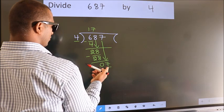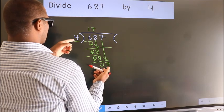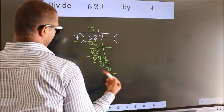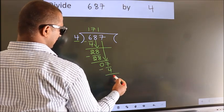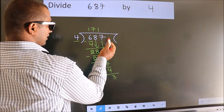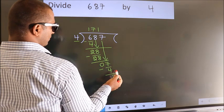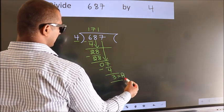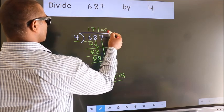A number close to 7 in the 4 table is 4 once 4. Now, we subtract. We get 3. No more numbers to bring down. So, we stop here. This is our remainder. This is our quotient.